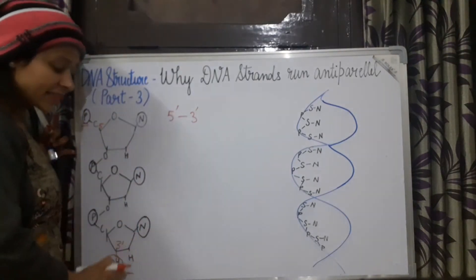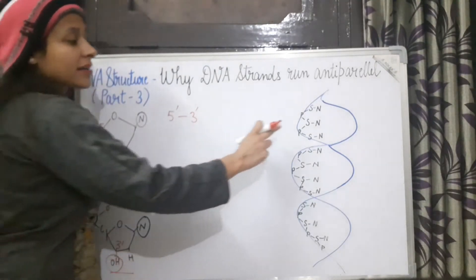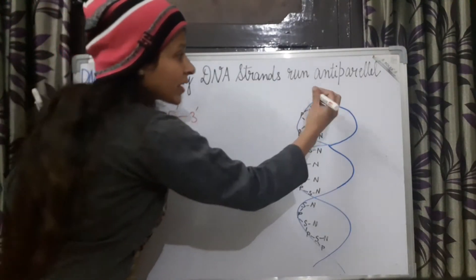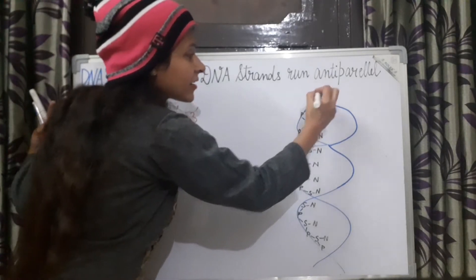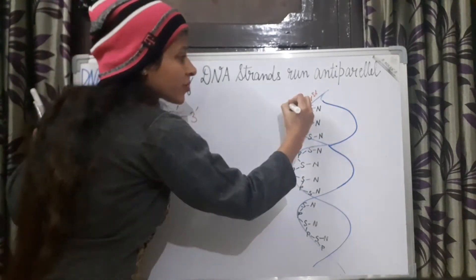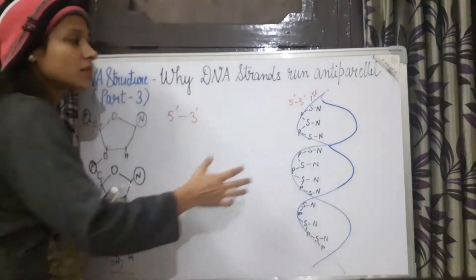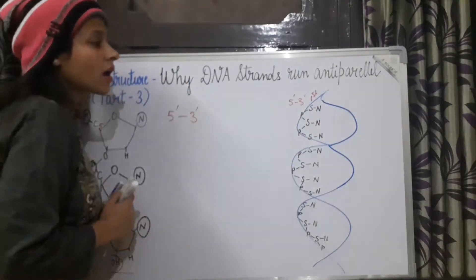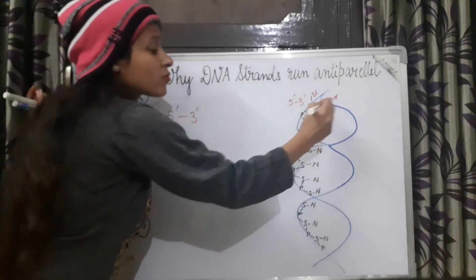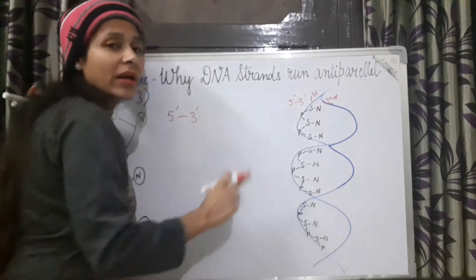So what is this DNA strand? It is 5' to 3'. That is our first DNA strand in the double helix model. Now we have to see whether our second strand is the same as the first strand, or why it is anti-parallel.